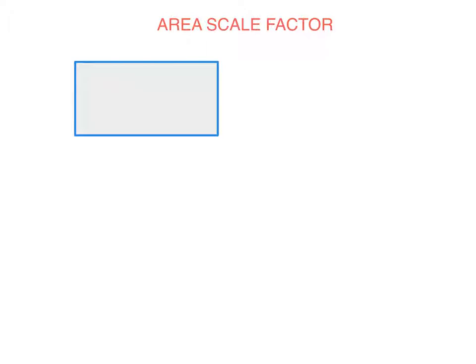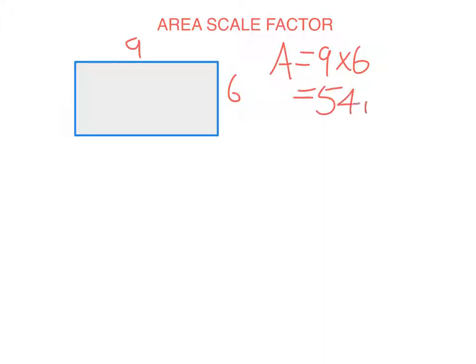So let's say we have a normal rectangle, and it's 9 by 6. We know the area of this rectangle — we just multiply the two together and get 54 units squared. Nothing groundbreaking.